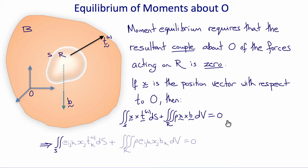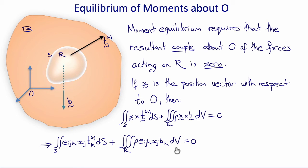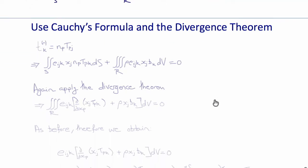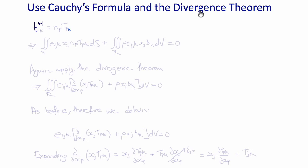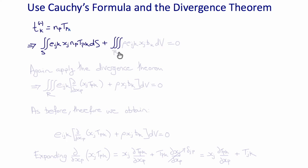Writing in index notation, we introduce the permutation symbol: the surface integral of Eijk Xj Tk with respect to S, plus the triple integral over R of rho times Eijk Xj Bk with respect to volume, equals zero. Using Cauchy's formula, Tk equals Np Tpk, and substituting that in, we have the surface integral of Eijk Xj Np Tpk with respect to S plus the volume integral of rho Eijk Xj Bk with respect to volume, equal to zero.